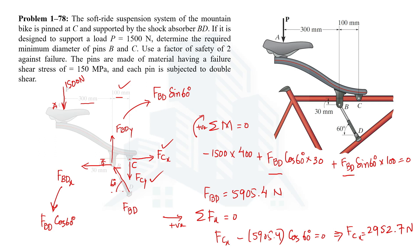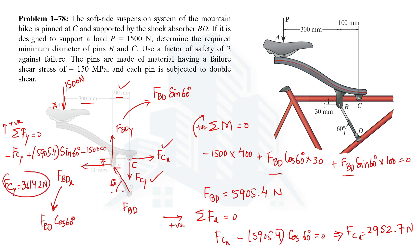For FCY, we use the second condition of equilibrium: summation of forces in the y-direction equals zero, taking upward as positive. FCY is downward (negative), FBD_Y is upward (positive). So: 5905.4·sin60° minus FCY minus 1500 equals zero. Solving, FCY equals 3614.2 Newton.